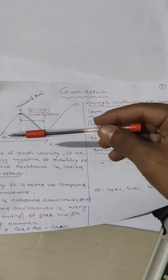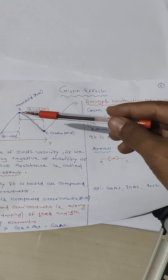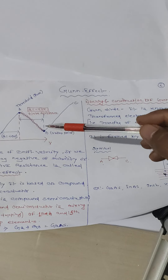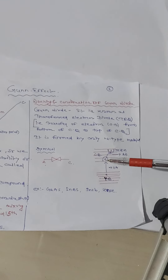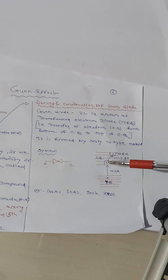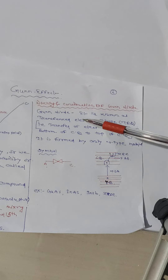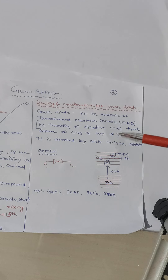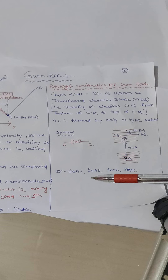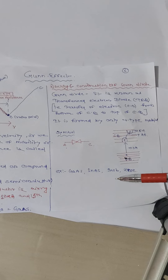In the characteristic curve, the OA region shows electron transfer from the valence band to the conduction band. Point A is the threshold point. Beyond A, the AB region shows electrons transferring from the bottom of the conduction band to the top of the conduction band — the satellite band. This transfer is the Gunn effect. Other examples of Gunn diode materials include gallium arsenide and indium arsenide.